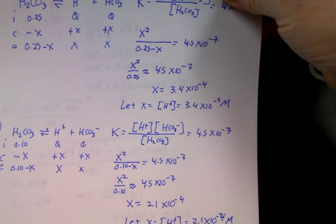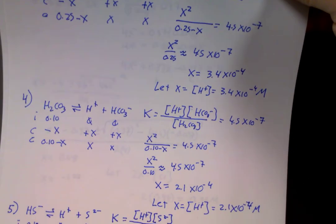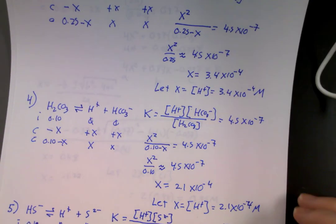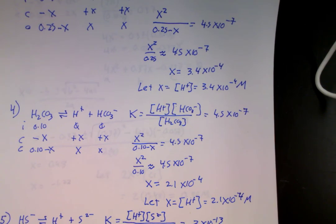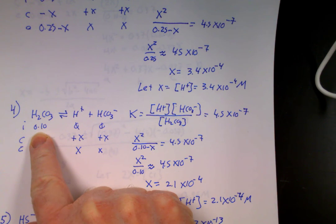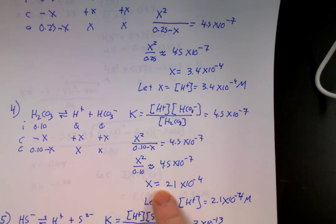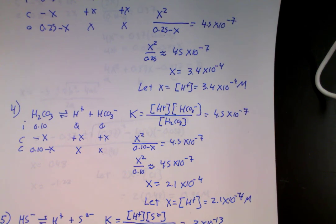Moving to number 4. Number 4 has actually the same reaction as number 3. The only thing we changed was the initial concentration. So this time, x is 2.1 times 10 to the negative 4th. And the H plus is 2.1 times 10 to the negative 4th molar.